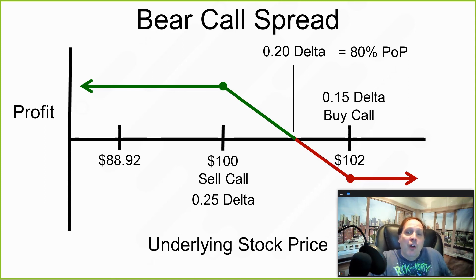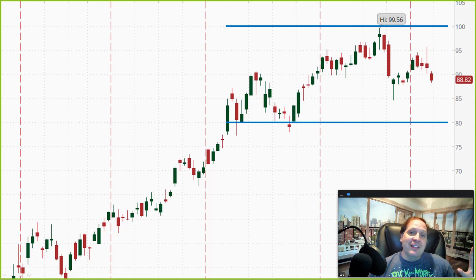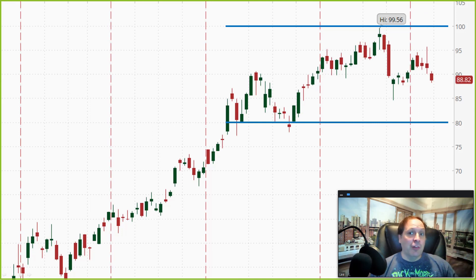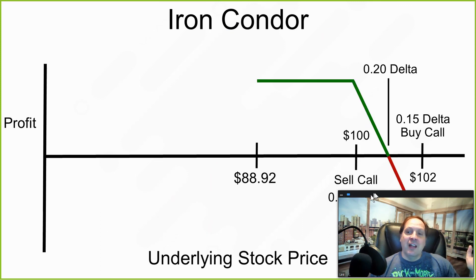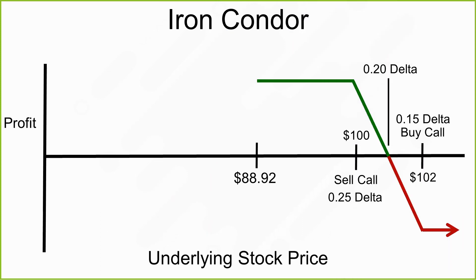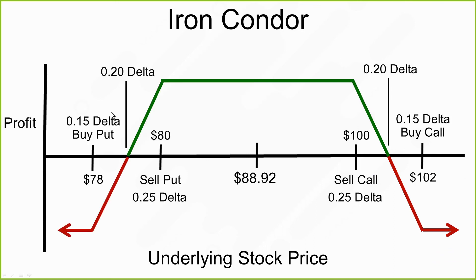Whether I'm bearish or bullish, I can still take a position that gives me an 80% likelihood of profit. But what if I thought this stock was going to range in the $90 price range — not going to fall below $80 and not going above $100? In that case, I can sell an iron condor: I would sell a bear call spread and also sell a bull put spread. Each of those has an 80% probability, but combined, the iron condor has a 60% probability of profit.